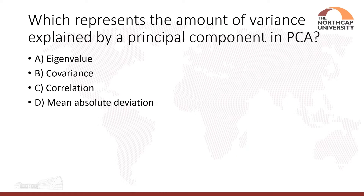The next question is: which represents the amount of variance explained by a principal component in PCA — eigenvalue, covariance, correlation, or mean absolute deviation? The answer is eigenvalue. Eigenvalue represents the amount of variance explained by a principal component. The higher the eigenvalue, the more variance is explained.